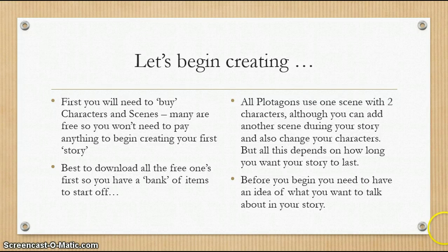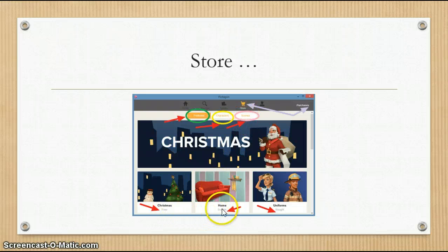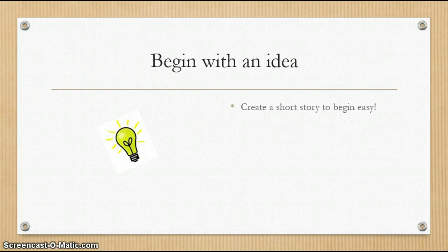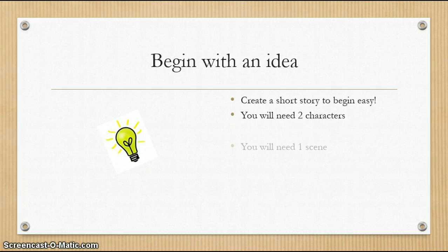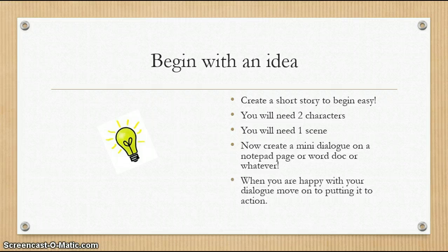Before you begin, you need to have an idea of what you want to talk about in your story, so it's best to start with a draft. This is just to show you what I meant by going to the store and buying your freebies or paid ones. There will be featured items, characters, and scenes — some free, some to purchase, but they're not very expensive. There's enough to use with the free ones. We need to create a story with two characters, one scene, and a mini dialogue — written on a notepad or word document. When you're happy with your dialogue, you can move on to putting it into action.